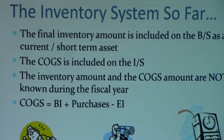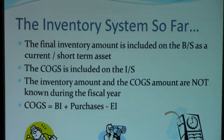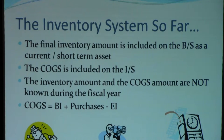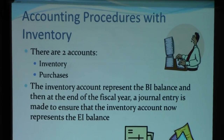To summarize what we have learned so far: the final inventory amount is included on the balance sheet as a short-term asset. Cost of goods sold is included on the income statement. The inventory amount and COGS amounts are not accurately known during the fiscal year — they are only known accurately at the end of the fiscal year. COGS can be calculated using the formula: beginning inventory plus purchases minus ending inventory. Two accounts need to be used throughout the year and at year-end: inventory and purchases.